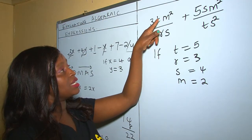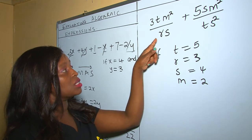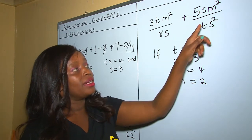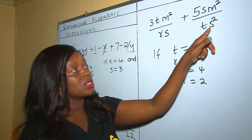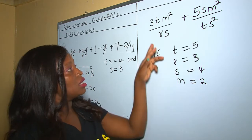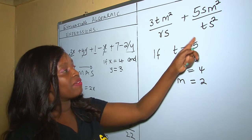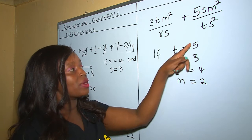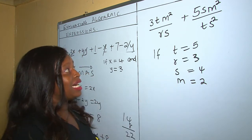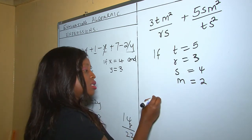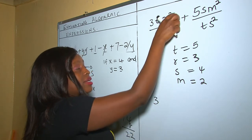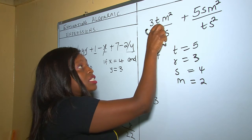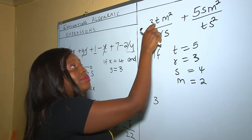We are given 3tm² all over rs, plus 5sm² over ts². All these unknowns have given values. The first thing to do is replace the unknowns with the real values. Let's start on this side: 3tm² — remember, it is m that is being squared, so 3tm² means 3 times the value of t times the value of m squared.